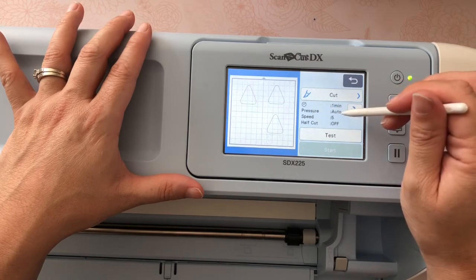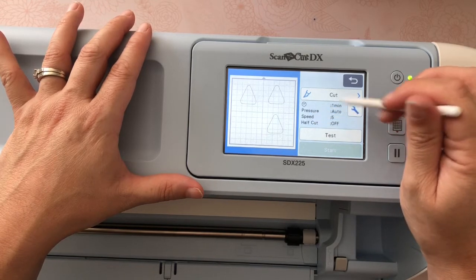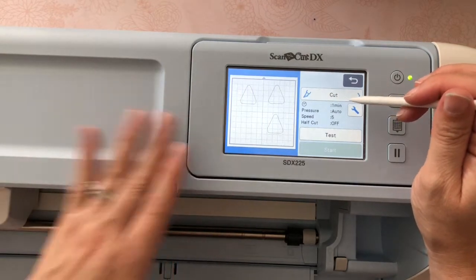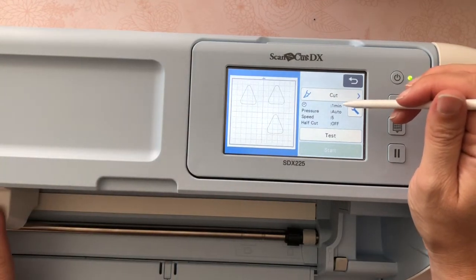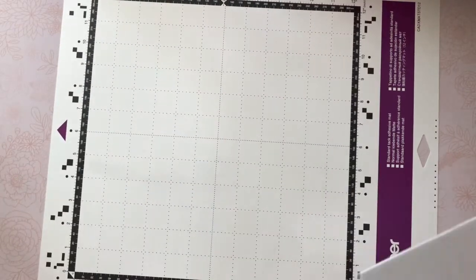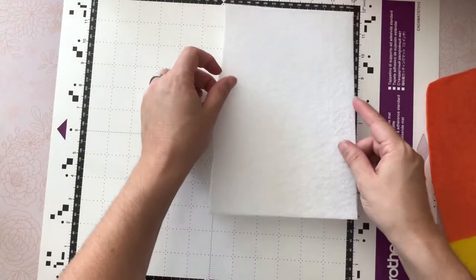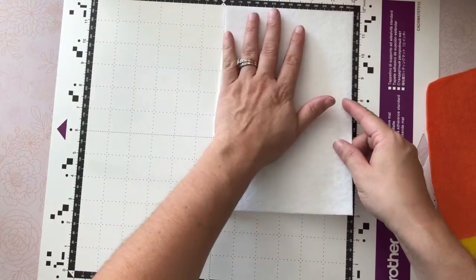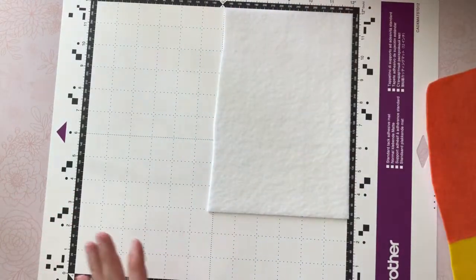You notice that the pressure is auto, half cut is off, so it's going to automatically gauge what I'm going to cut. So I'm gonna go grab my felt here. Here is my mat, you'll notice everything's a little bit different with the DX versus the previous Scan and Cut. You'll see more of that in my videos.